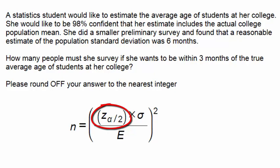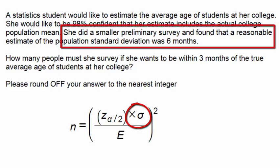z subscript alpha divided by 2 is the z-score associated with alpha divided by 2. And here we need to remember that alpha is directly related to the level of confidence, which in this case is 98%. Sigma is the standard deviation. The student found that a reasonable estimate of the population standard deviation was six months.